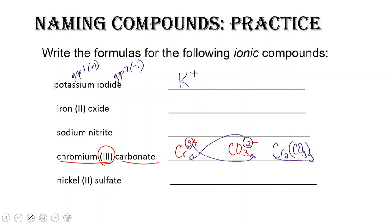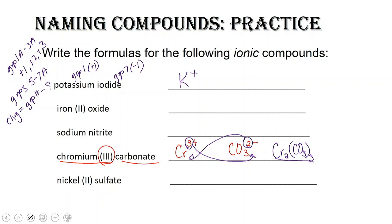How do you get the charge so simply? The group numbers give you the charge. Groups 1A through 3A have plus one, plus two, and plus three charges. Groups 5A through 7A: the charge is equal to the group number minus eight. So group 5A is minus three, 6A is minus two, and 7A is minus one.